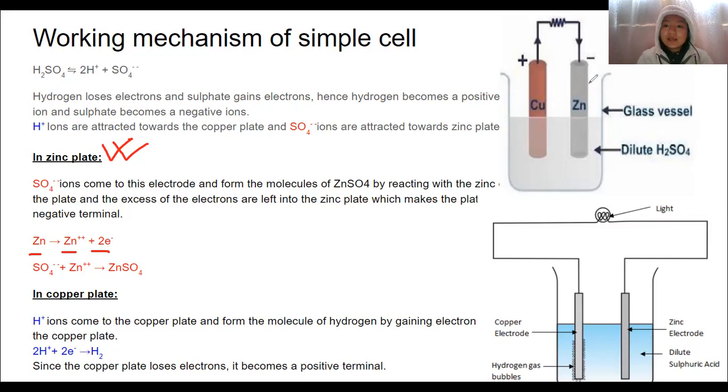Now, at this end, zinc metal becomes positive. So, the negative ions, sulfate radicals, sulfate ions in the electrolyte are attracted towards positive zinc metal, this rod here. So, the sulfate ion combines with zinc ion to form zinc sulfate.